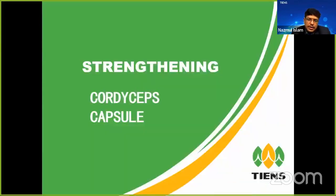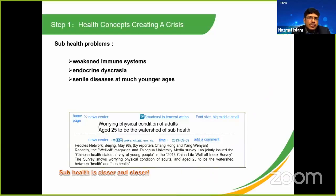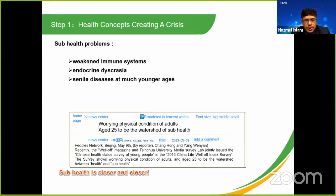The next product is the Codicep capsule. The Codicep capsule is a very important product. It involves the winter grass — the winter is a good thing to do with the grass.